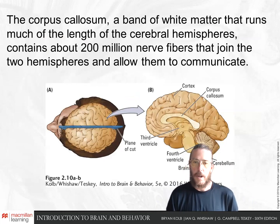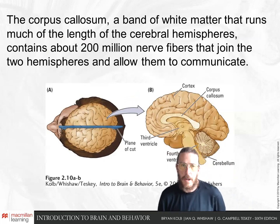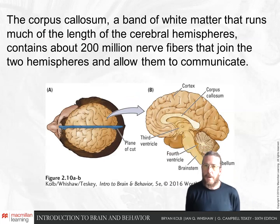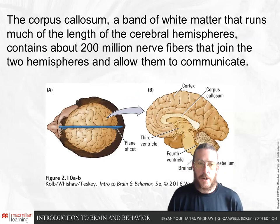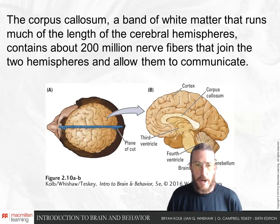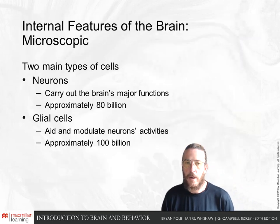The corpus callosum is this band of white matter connecting the two hemispheres together. It has about 200 million axons connecting the left and right hemisphere, and in general one area on the right hemisphere will connect to the analogous corresponding area on the left hemisphere through this pathway.